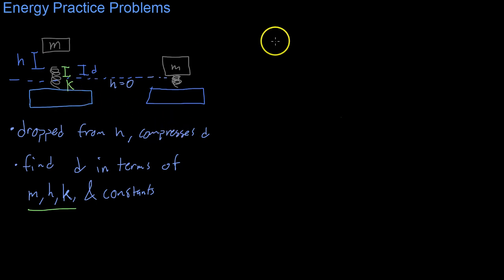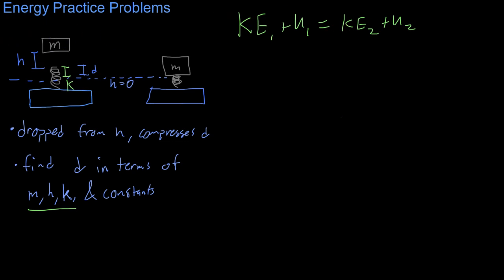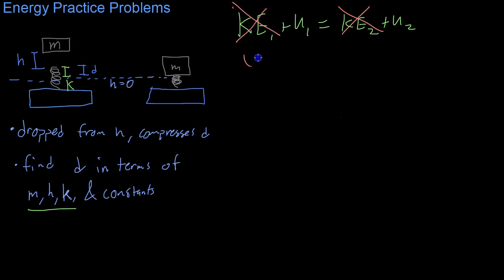Because this is a conservative force, we start off by saying that KE₁ plus U₁ equals KE₂ plus U₂. We know that at the end of the problem it's not moving, so we can eliminate the KE₂ term. And at the beginning it's also not moving — you're dropping it from rest — so we have that U₁ equals U₂.